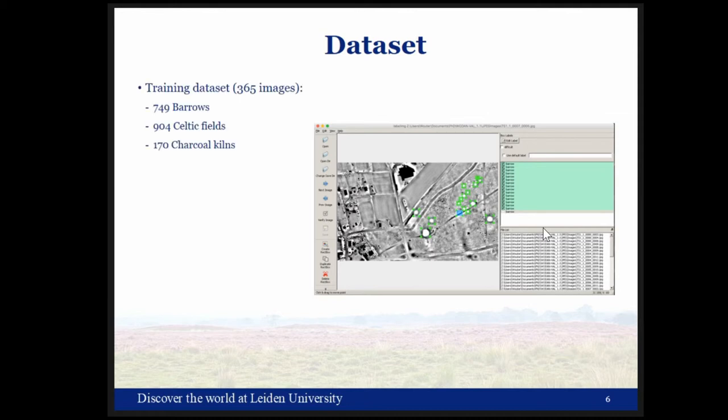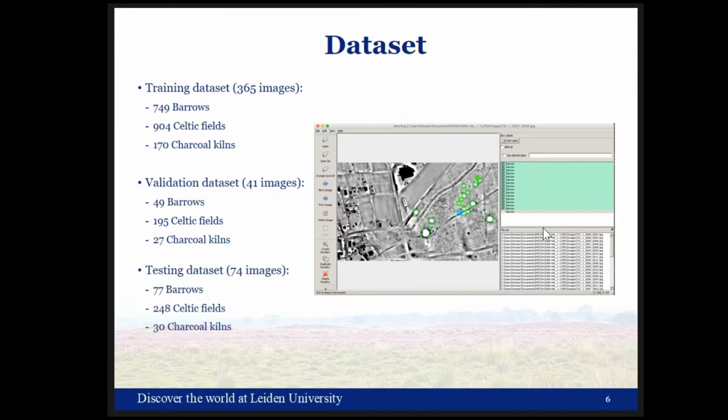We have a total of 470 subtile images split into a training dataset of 365 images, a validation set of 41 images used to monitor for overfitting during training, and a testing dataset of 74 images.